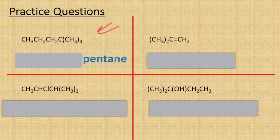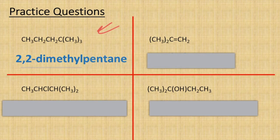So it's going to be pentane, and we have got two methyl groups coming off the second carbon in the chain, so the name is 2,2-dimethylpentane.